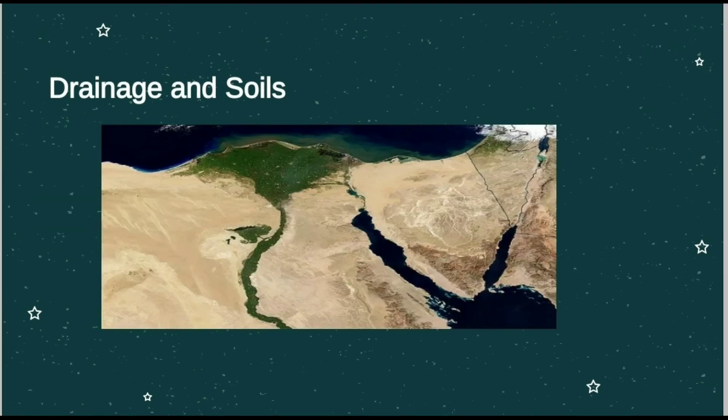Throughout much of history, the Nile Delta in the north of Africa has been more densely populated than the surrounding area because the Delta has great fertile areas and is well-drained. The fertility of the soil has allowed it to support a very large population. There's a picture showing the Nile Delta — while other surrounding areas are very dry, the Delta is so green. The situation of the Delta is very dry, but the site at the Delta is green and fertile.